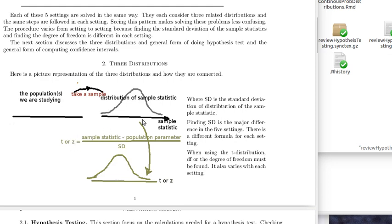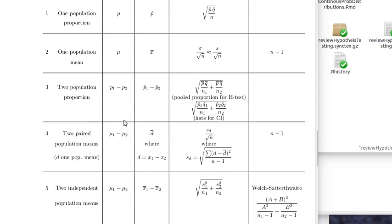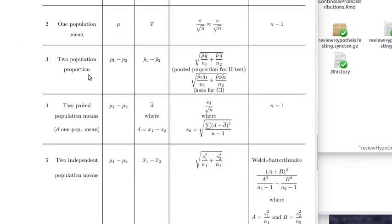The z-value is the sample statistic — the difference between our two sample proportions — minus the population parameter from the null hypothesis, which is zero because p1 minus p2 equals zero under the null hypothesis. We need to know the standard deviation of the distribution of this sample statistic. Since we're doing a two-population proportion hypothesis test, we will use the pooled standard deviation for that.